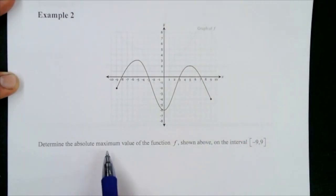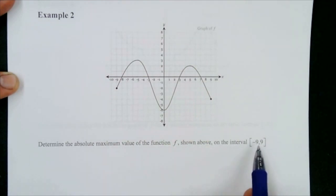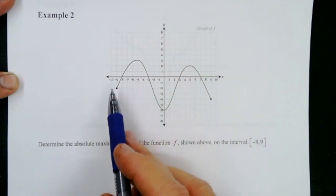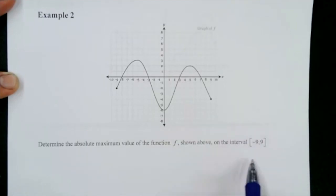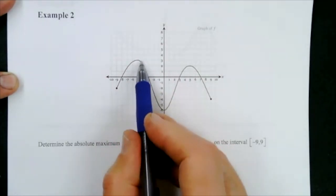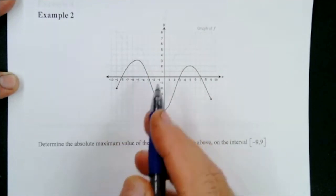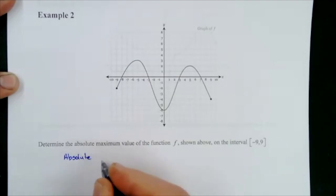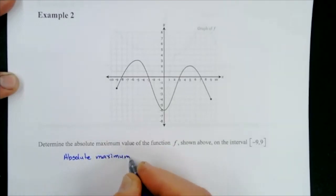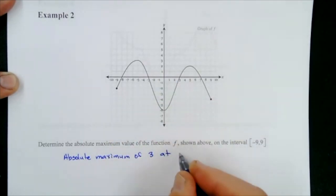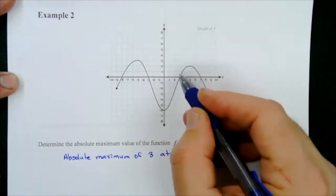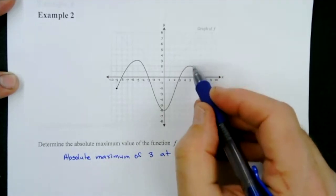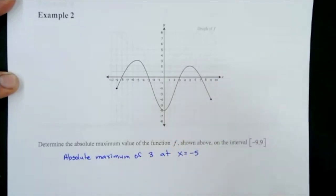For the next example, determine the absolute maximum value of f shown above — this time on the closed interval negative two to nine. We have a closed interval and a continuous function. Remember the Extreme Value Theorem: if you have a continuous function on a closed interval, you're guaranteed to have both an absolute maximum and an absolute minimum. The highest y-value is right here at three, occurring at x equals negative five, so the absolute maximum is three at x equals negative five.